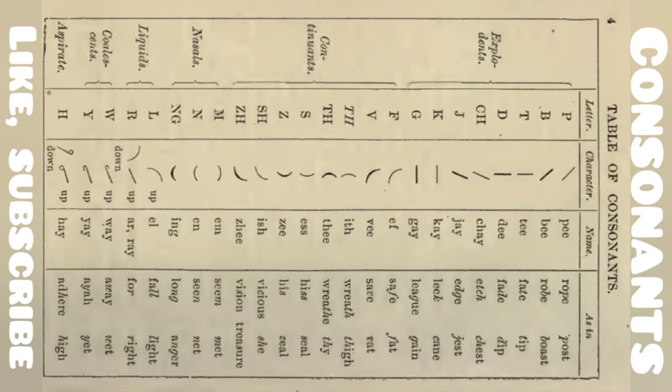Nasals: M, N, ING. And next, liquids: L and R. These are words written from the related strokes.